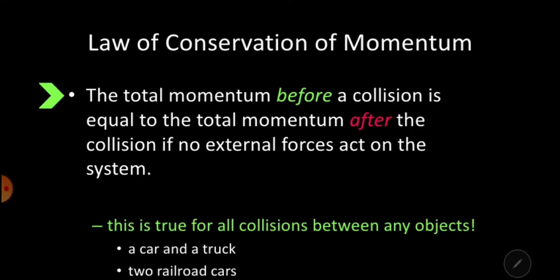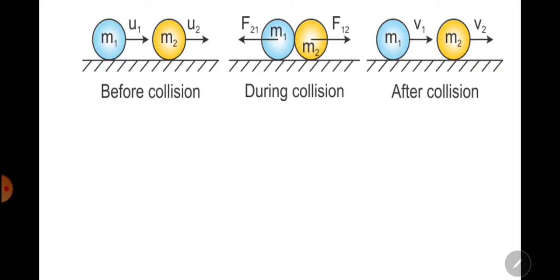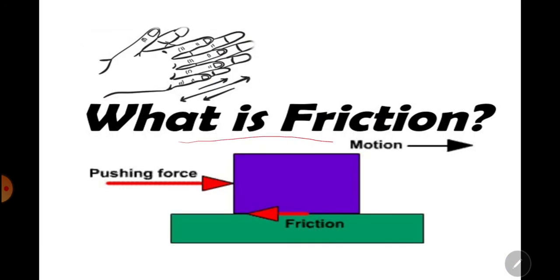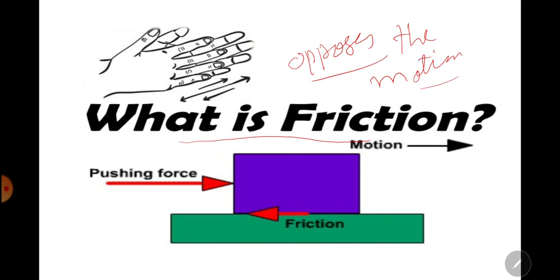Then we studied the law of conservation of momentum: the total momentum before a collision is equal to the total momentum after collision if no external force acts on the system. In one way, it represents Newton's third law of motion. Friction is the force which opposes the motion of one body over the surface of another body.